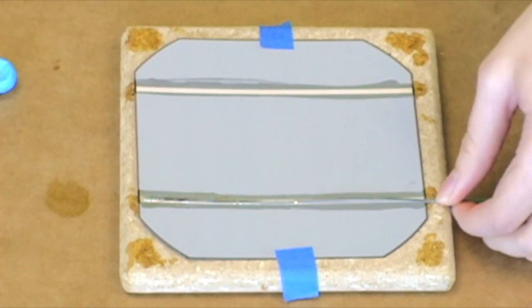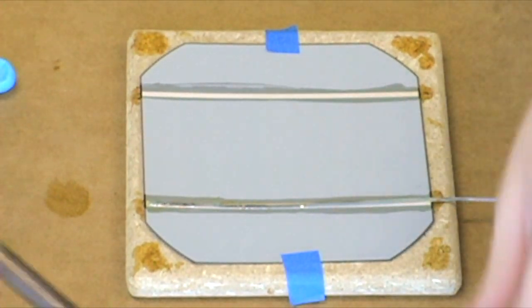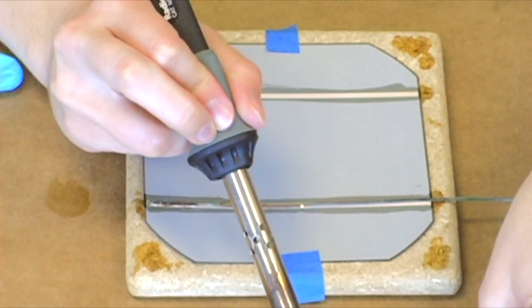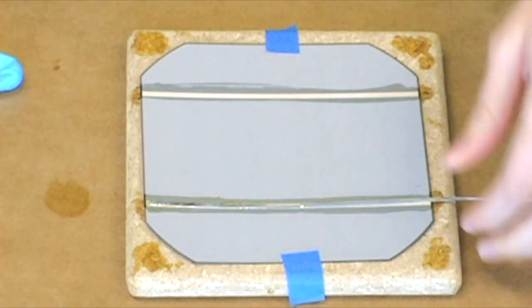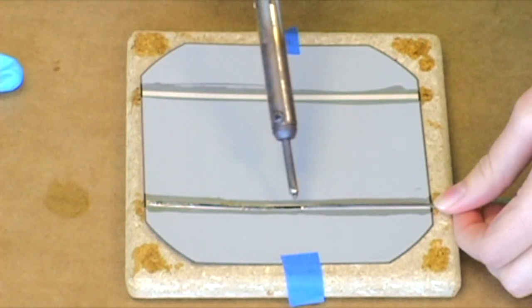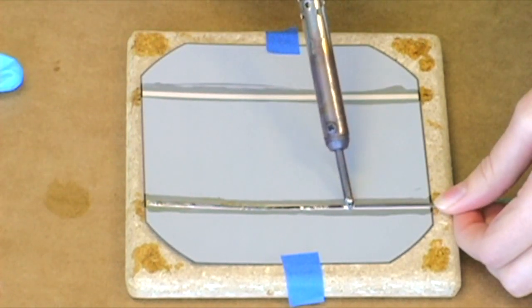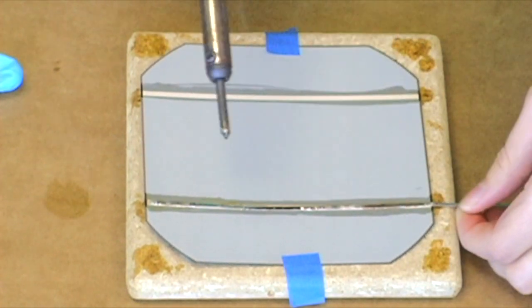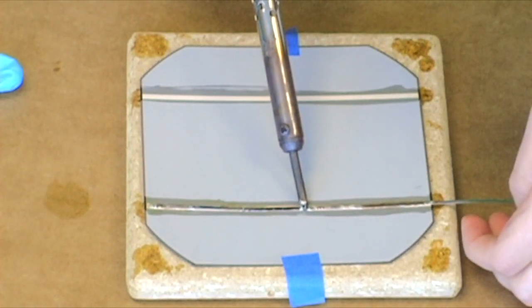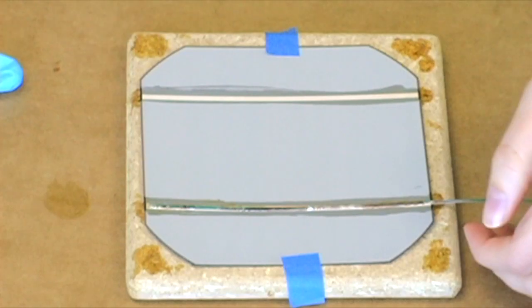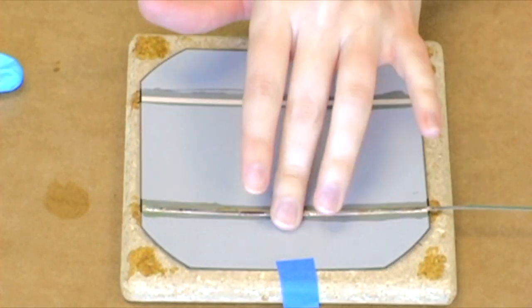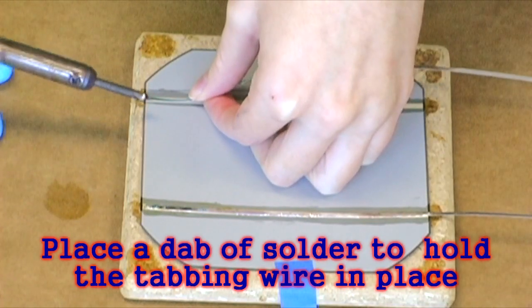Spread the solder about halfway down the cell, apply another three-eighths of an inch of solder, and spread it down the other half. Make sure there are no bumps or excess buildup of solder, then repeat this process for the bottom trace.